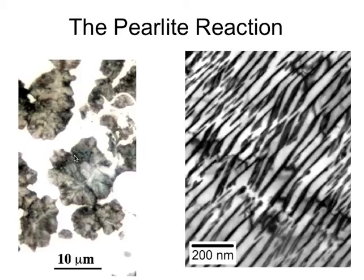You have to go to another colony before a cleavage crack deflects. So to get better toughness you need to refine the colony size, and strength will definitely increase when you reduce the interlamellar spacing.